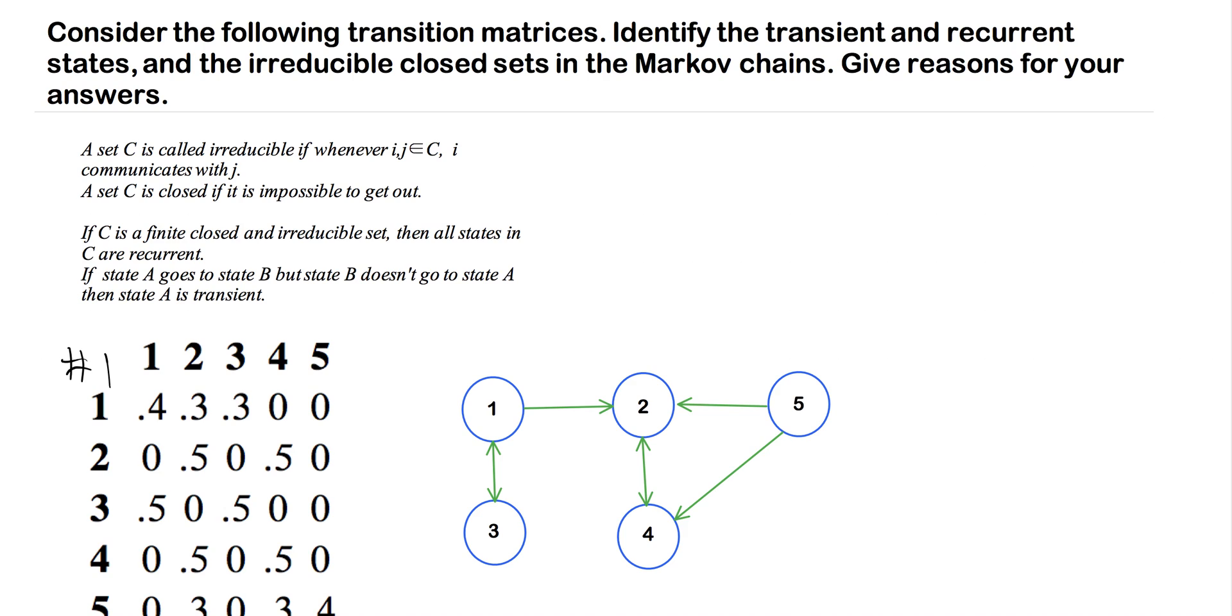Before we start these three examples, I'm just going to go over what it means to be transient, recurrent, irreducible, and closed. So I've written out these definitions at the top.